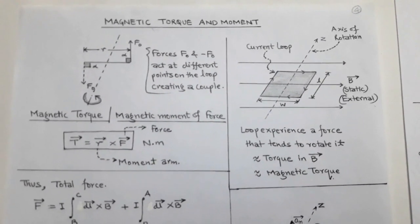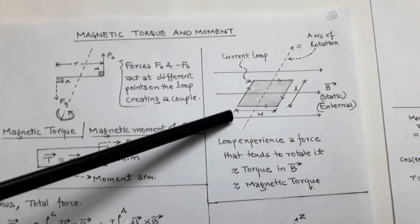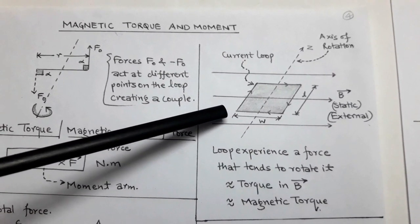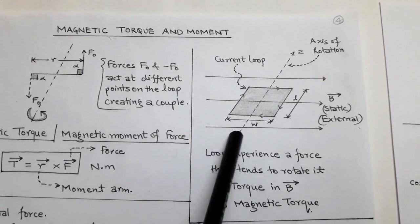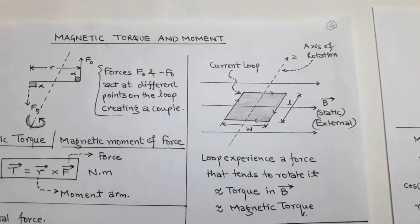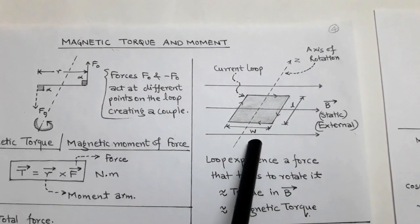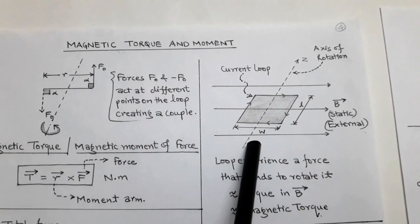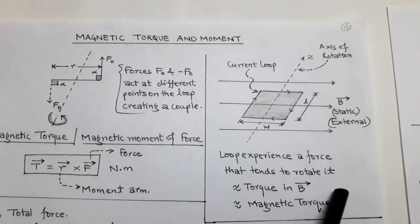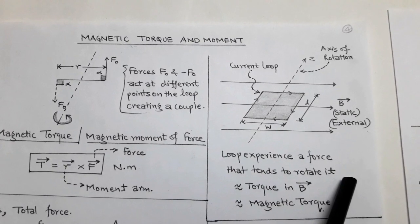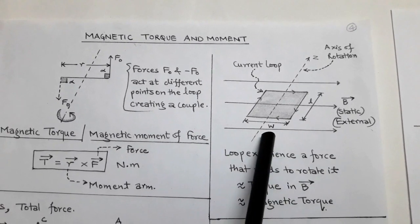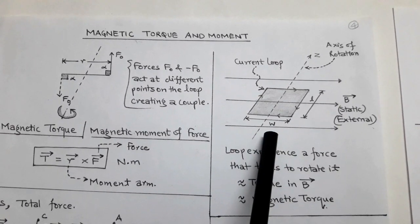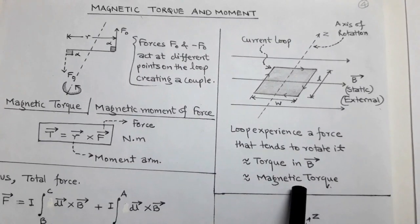The topic is magnetic torque and moment. To determine the magnetic torque, we consider a current loop placed in an external magnetic field. This current loop has some axis of rotation. As the current-carrying loop is placed in the external magnetic field, it experiences a force and tends to rotate. This force which makes the current loop rotate about its own axis is called torque or magnetic torque.